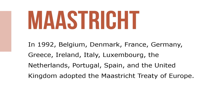In 1992, Belgium, Denmark, France, Germany, Greece, Ireland, Italy, Luxembourg, the Netherlands, Portugal, Spain, and the United Kingdom adopted the Maastricht Treaty of Europe. The purpose of this treaty was to transform their 12 different economies and 12 currencies into one common economic market called the European Union, or EU, with one common currency.